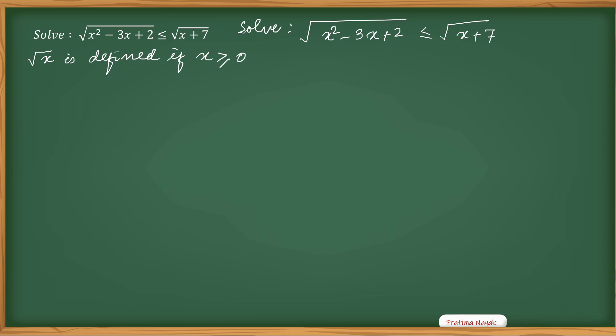So first on the left hand, √(x²-3x+2) is defined if x²-3x+2 is greater than or equal to 0.